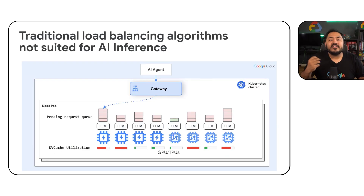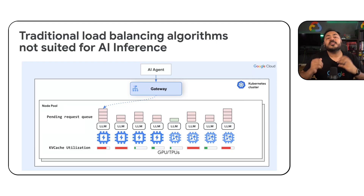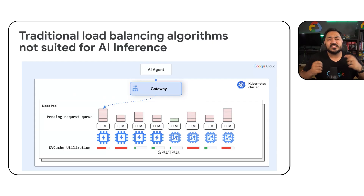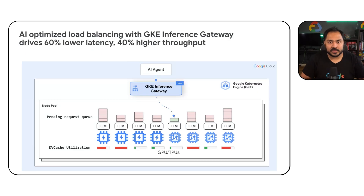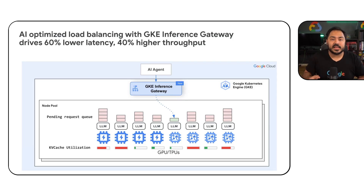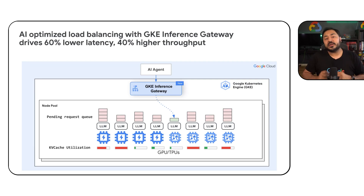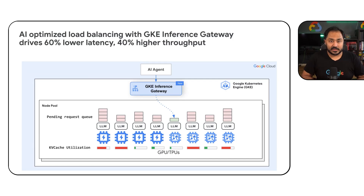AI inference workloads have highly variable processing times, from seconds to minutes, and each request is much more compute-intensive compared to traditional web requests. Because of this high variability, using round-robin routing can lead to sending a request to a GPU that is already oversubscribed, leading to high wait times and a poor user experience. Based on benchmarks we ran, we found that KVCache utilization and pending request count gave us the best signal to find which GPUs are least utilized, and using these metrics in GKE Inference Gateway, we can route traffic to the GPU that gives the best performance and lowest latency.